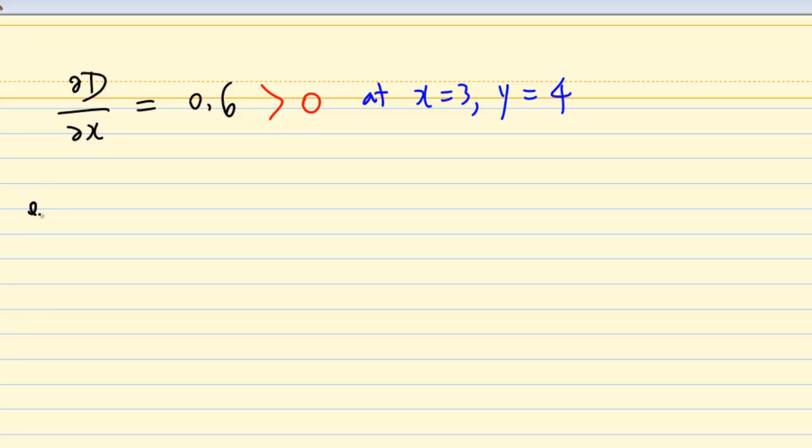So for example, when x equal to 3, y equal to 4, the diagonal D is equal to square root of x square plus y square, which is equal to 5.